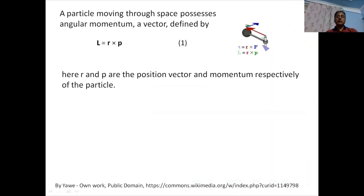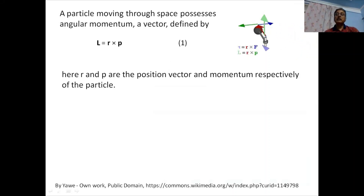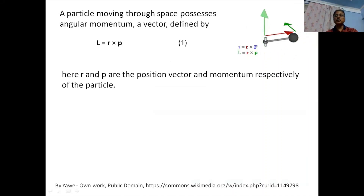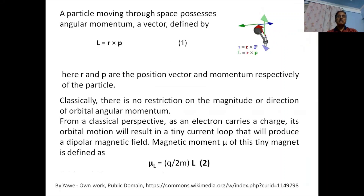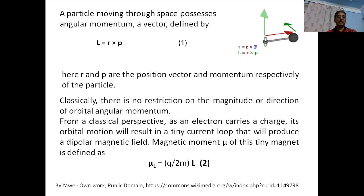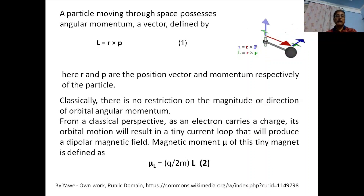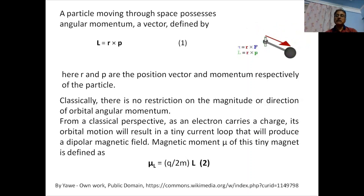As we know, when a particle is taking rotation on an orbit, its angular momentum is perpendicular to the plane of that orbit, as shown by this diagram. This is given by L = R cross P. Classically, there is no restriction on the magnitude or direction of the orbital angular momentum. From a classical point of view, an electron carries a charge and therefore its orbital motion will give us a current loop, which will subsequently produce a dipole magnetic field.